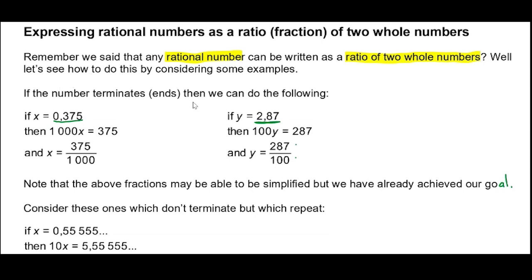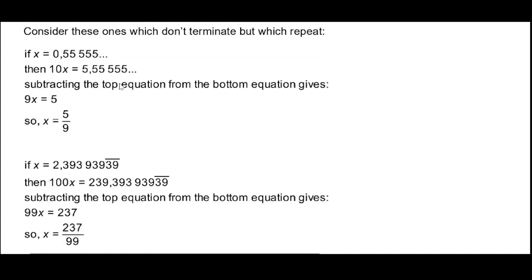Now let's look at numbers that don't terminate but do repeat. For example, x = 0.5555... repeating forever. If we multiply by 10 we get 10x = 5.555... We subtract the original from this: 10x − x = 9x = 5, because all the repeating fives cancel. So x = 5 over 9. Check on a calculator — divide 5 by 9 and you get the repeating decimal, written as a ratio of two numbers.